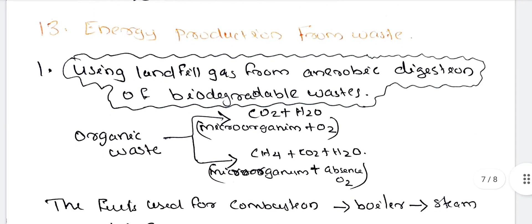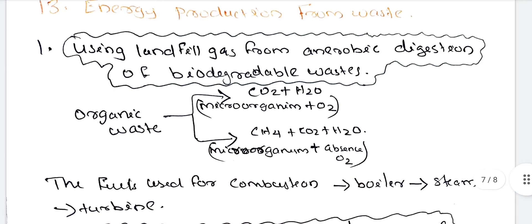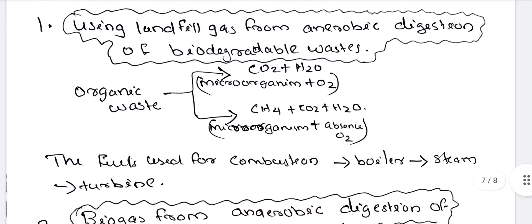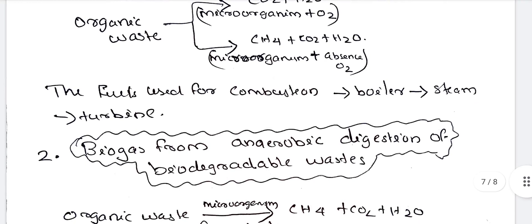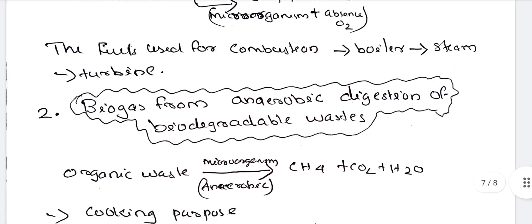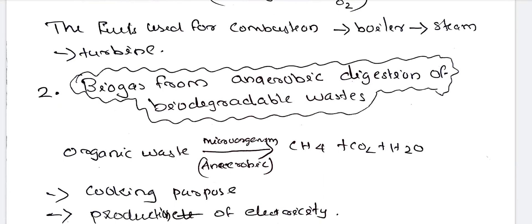Next: energy production from wastes. Methods include: landfill gas from anaerobic digestion of biodegradable wastes. In the presence of oxygen, CO2 is produced; in the absence of oxygen, methane gas is produced. These fuels are used for combustion in boilers to produce steam for air turbines.